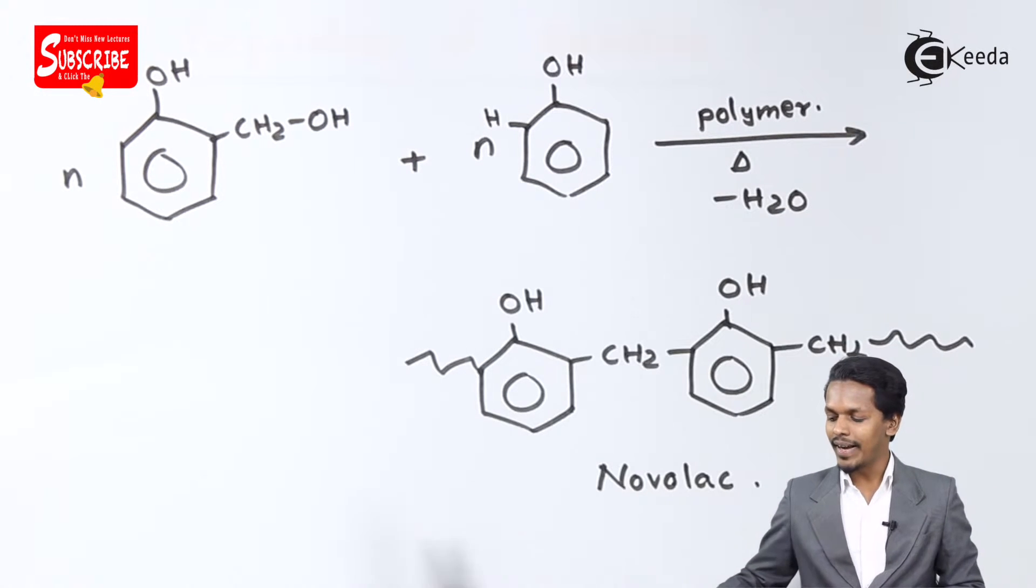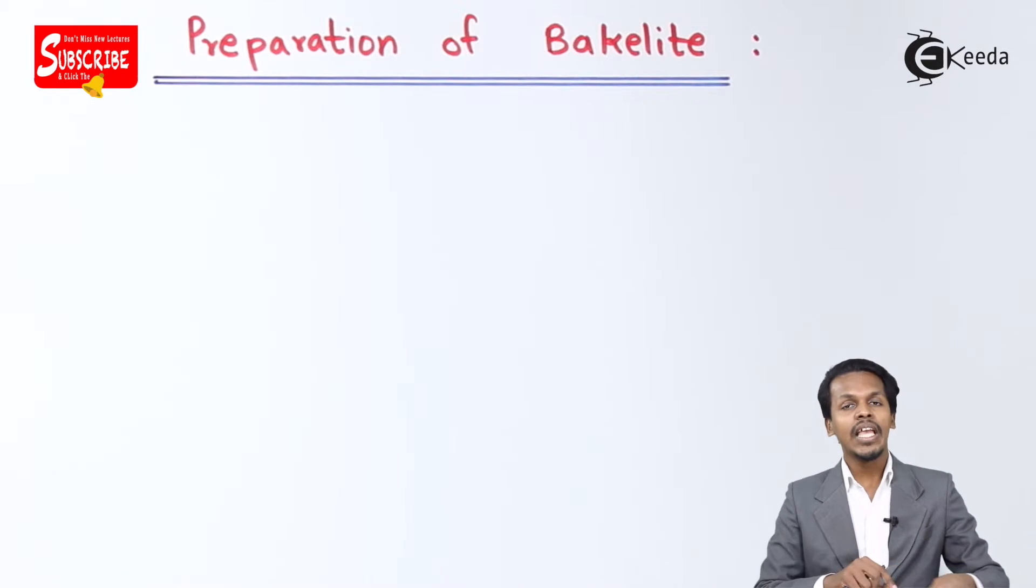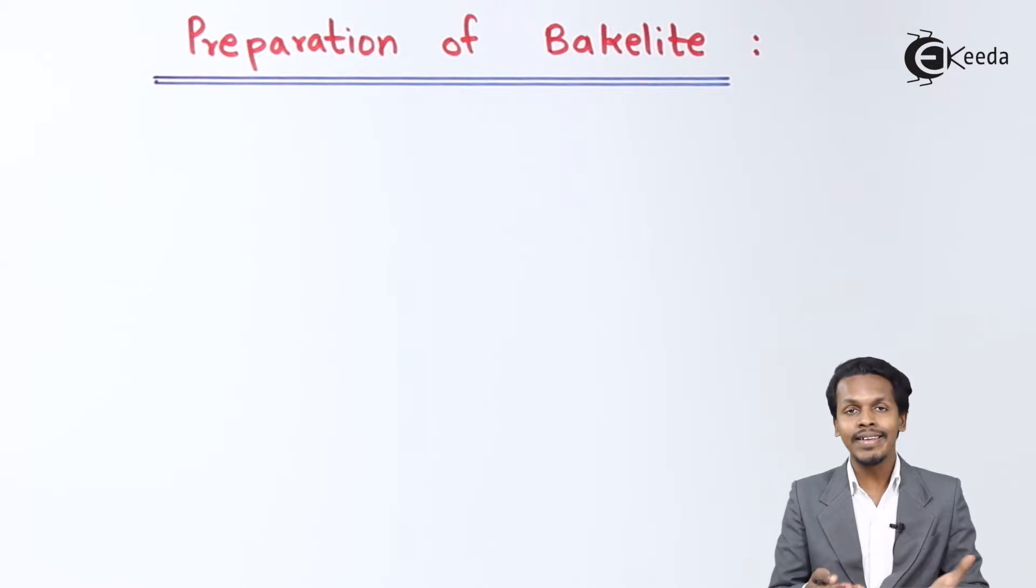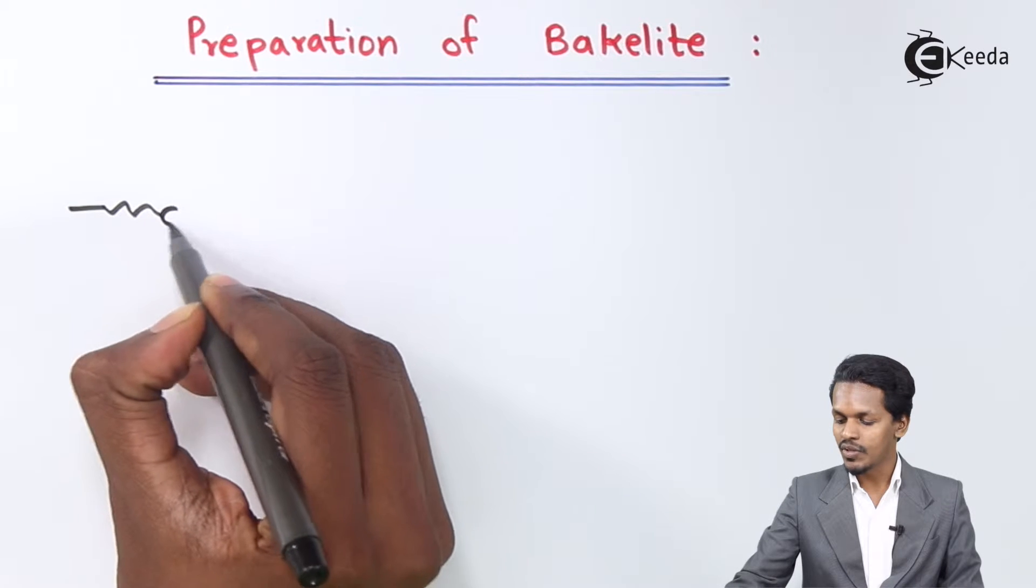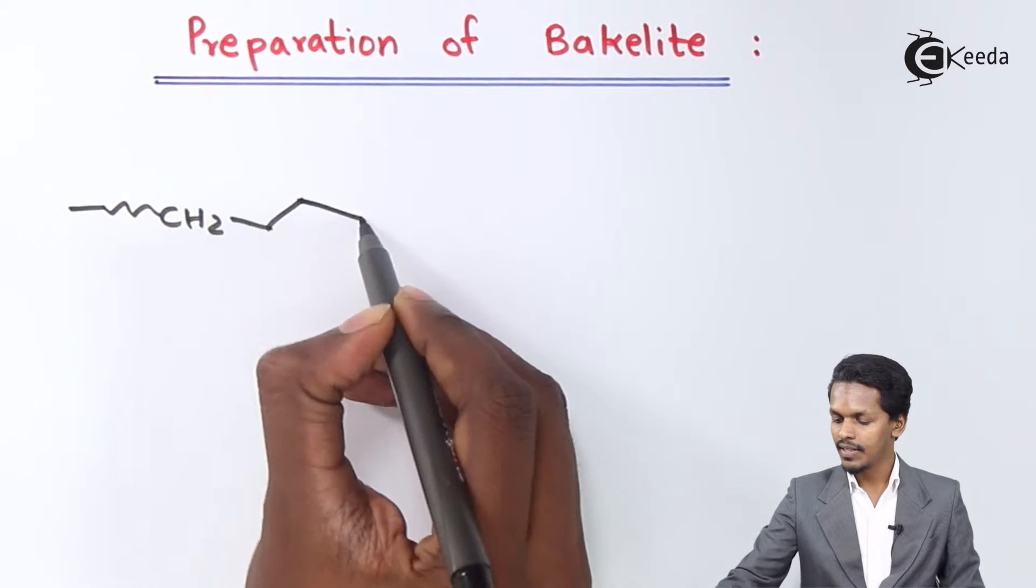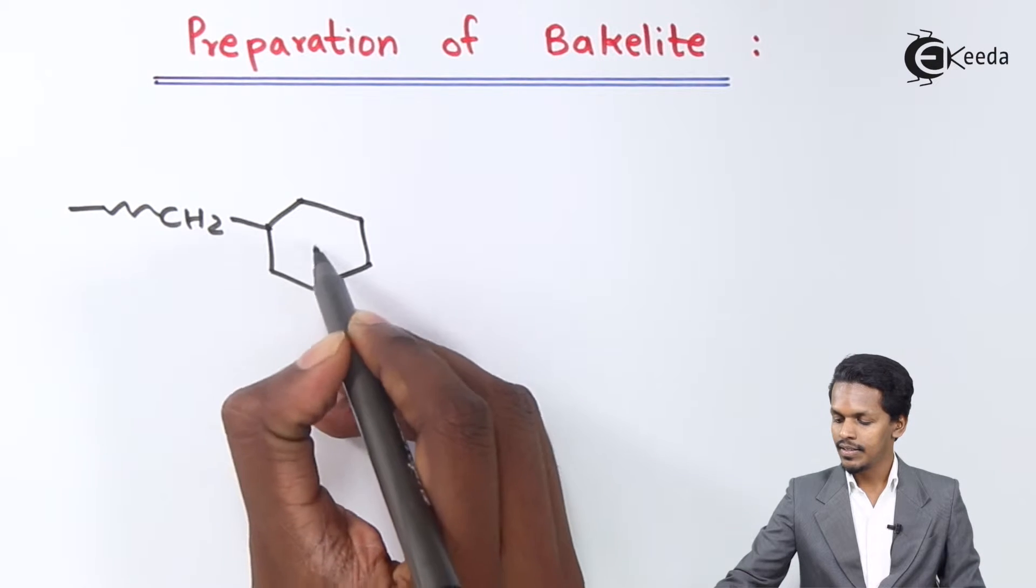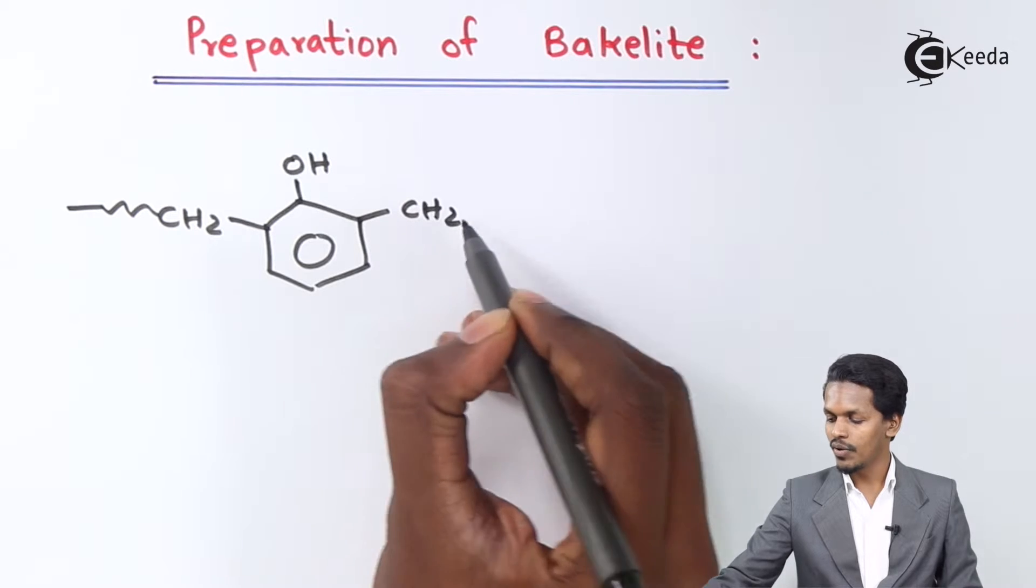This is how we prepared Novolac, which is a linear polymer. We are considering two linear Novolac polymers. Let me introduce the molecule. This is Novolac.